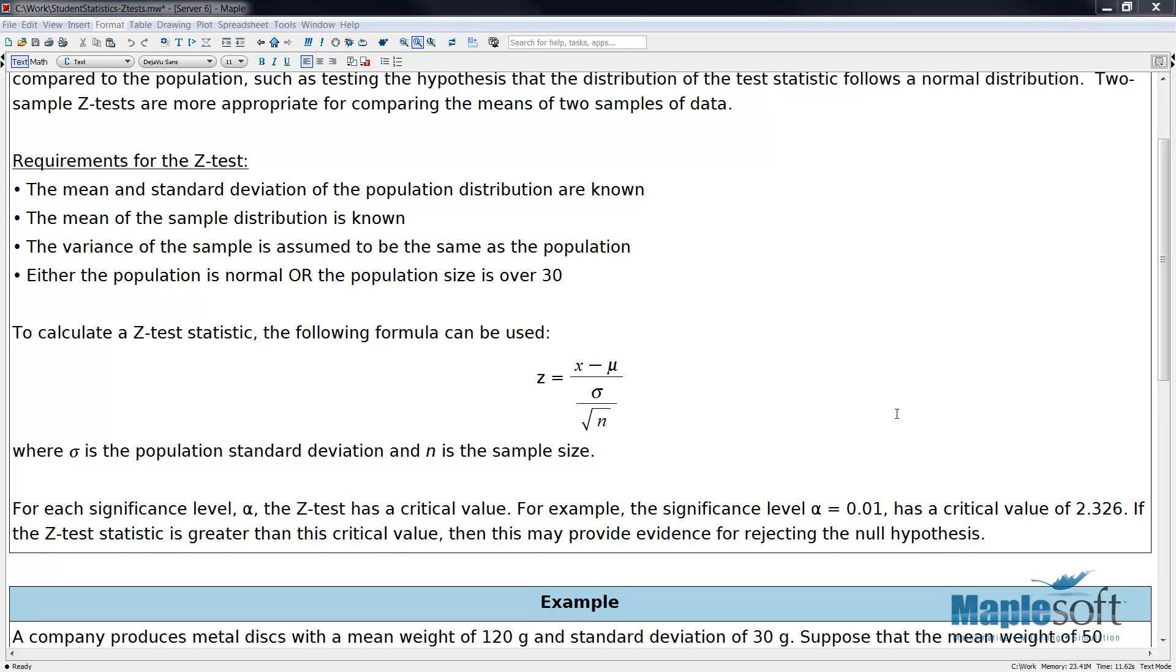For each significance level α, the z-test has a critical value. If we're past that critical value for the z-value, then there may be evidence for rejecting our null hypothesis.